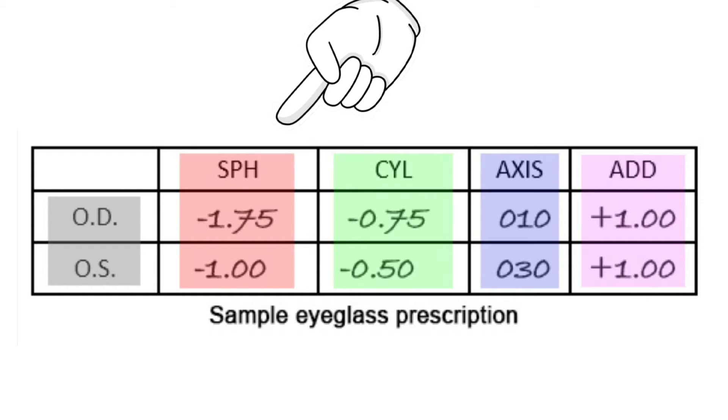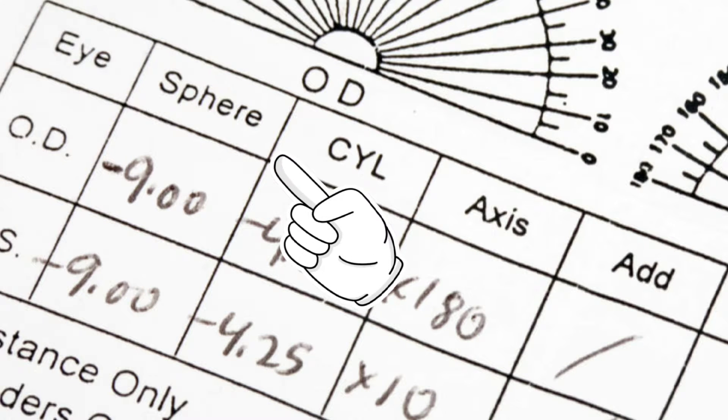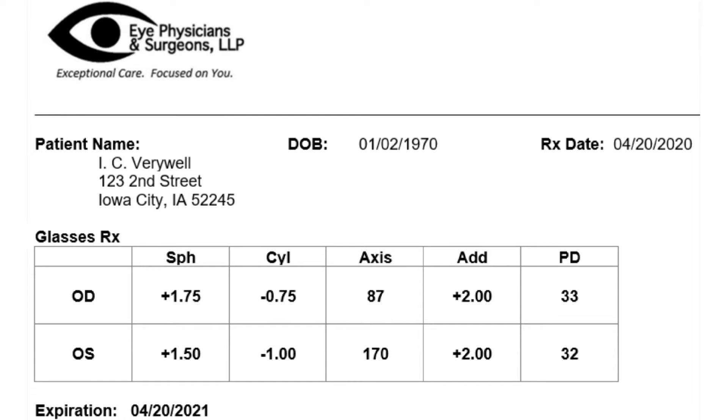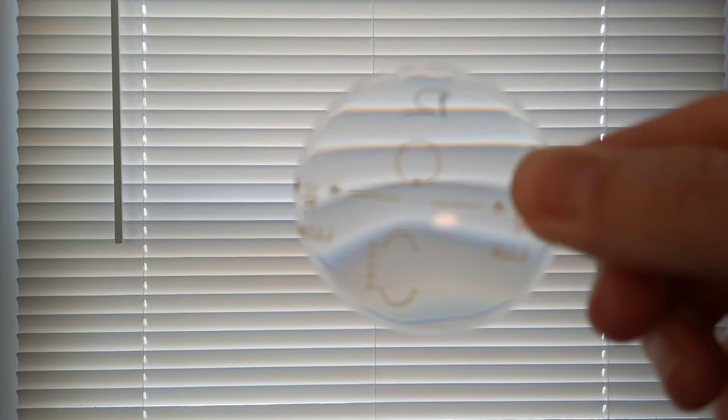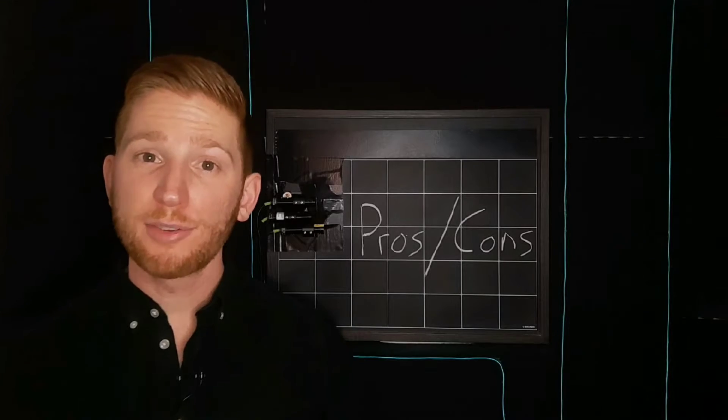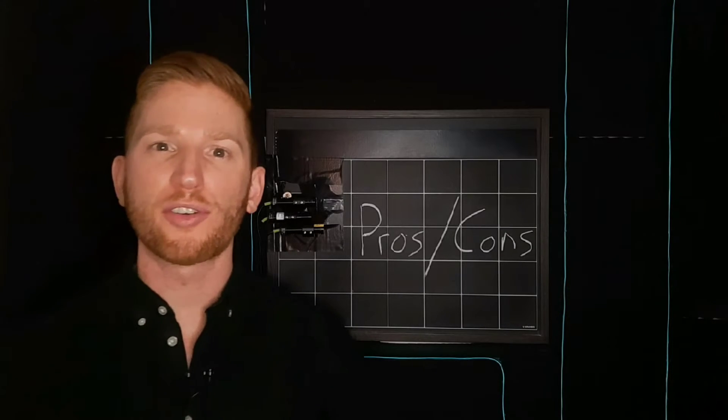If you're looking at your glasses prescription, the first number under spherical or SPH describes your overall lens correction. But if you have a number under addition or add, that means that you have progressive lenses. Now it's time for the pros and cons of progressive lenses.